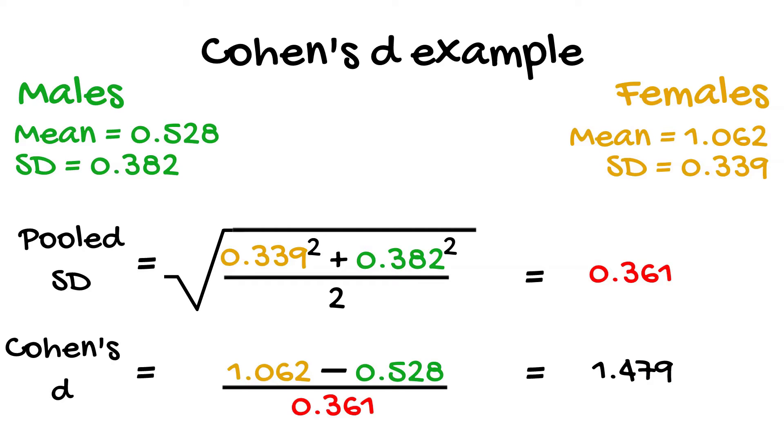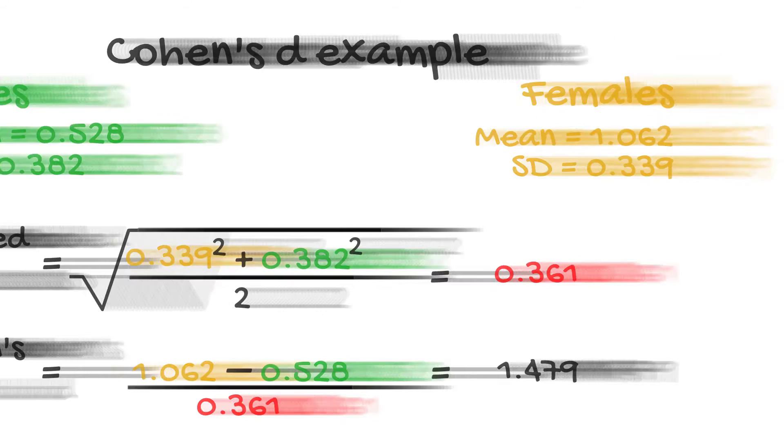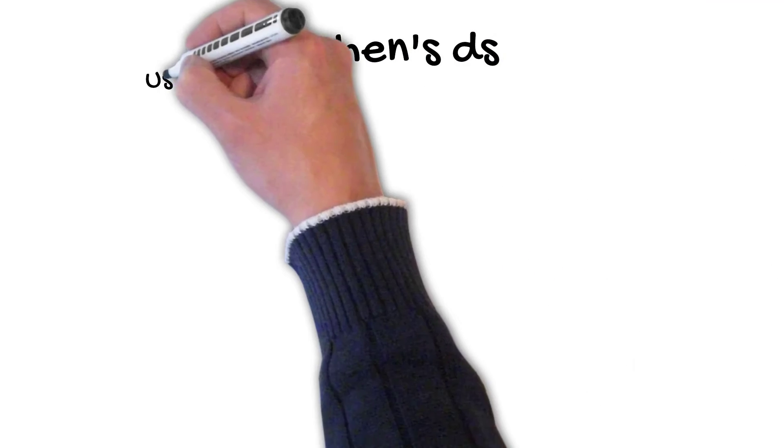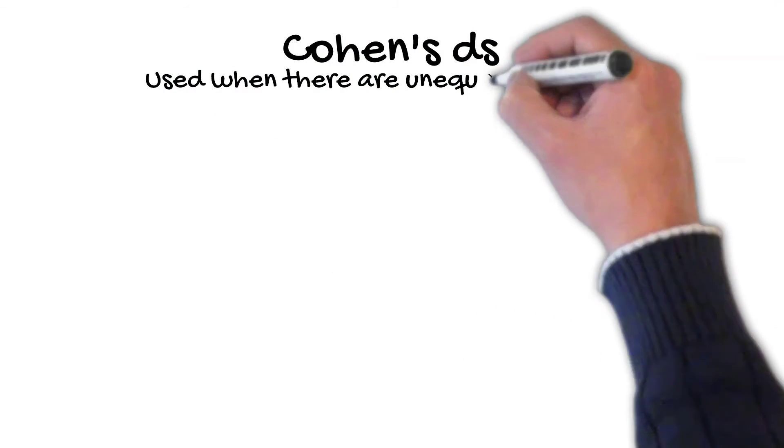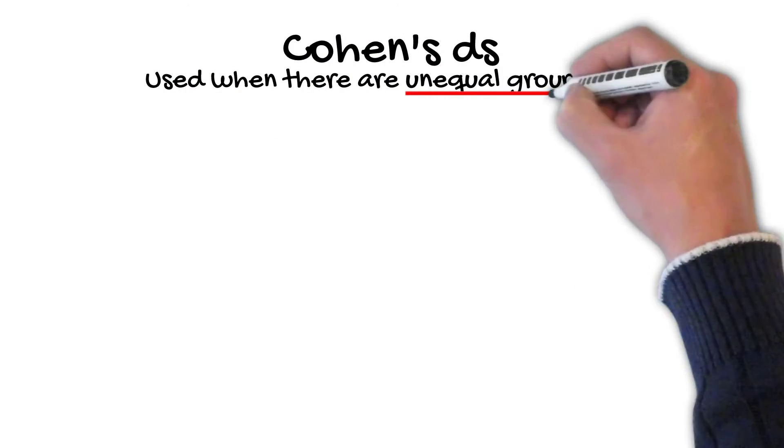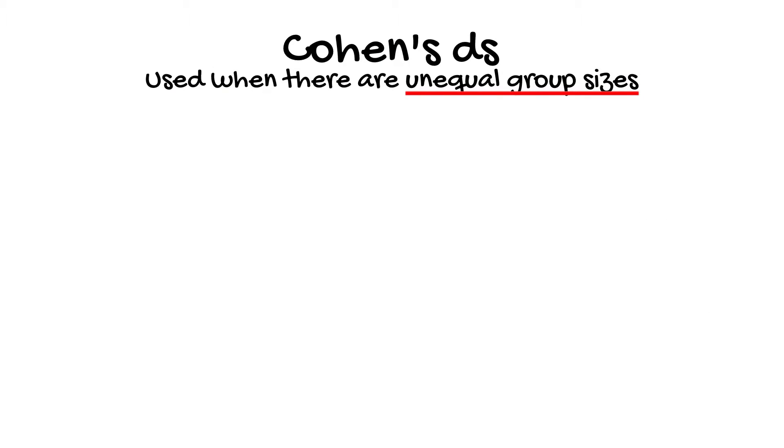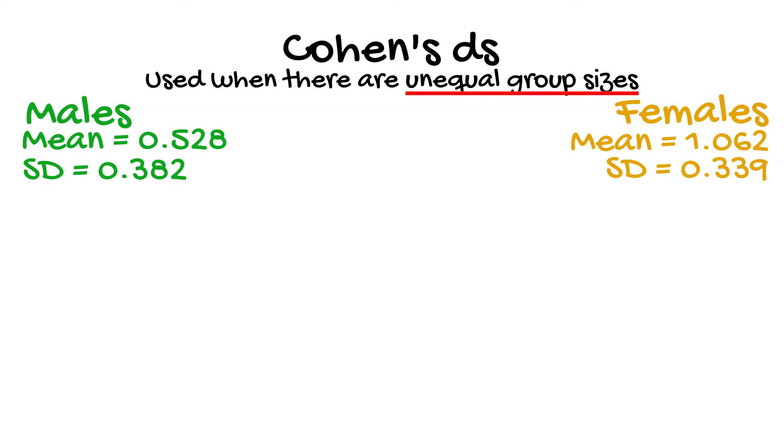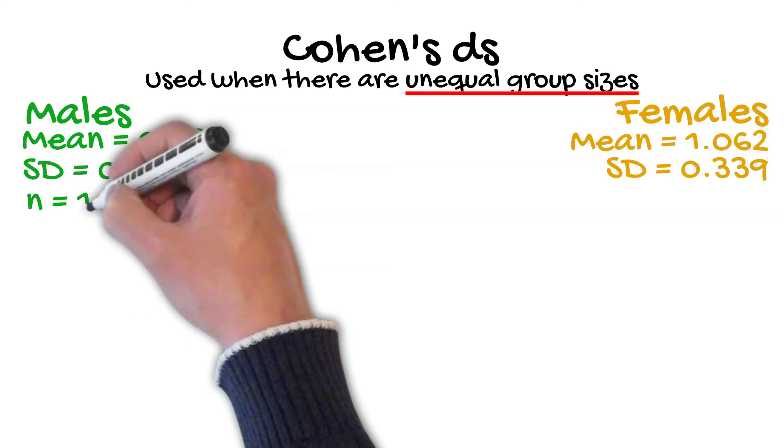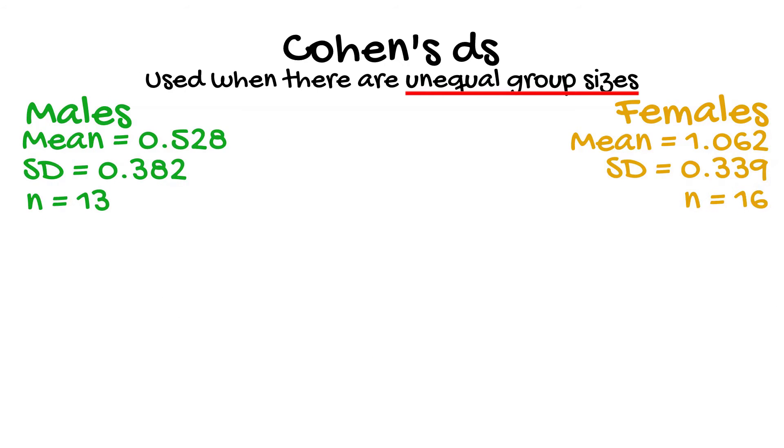Now, what about if the groups had unequal group sizes? This is where a variant of the original Cohen's D equation comes in handy, and this variant is termed Cohen's DS. If we take the same example as before, but this time we have information on the group sizes, so there were 13 males and 16 females. This time, the calculation for the pooled standard deviation is slightly different.